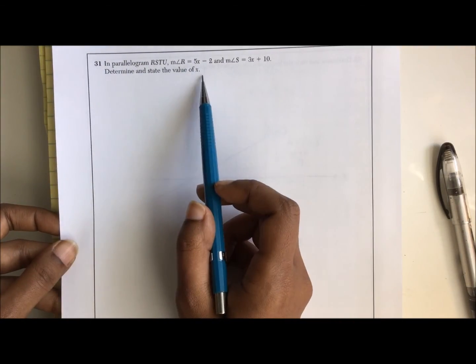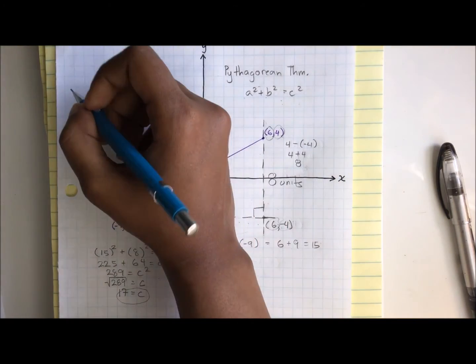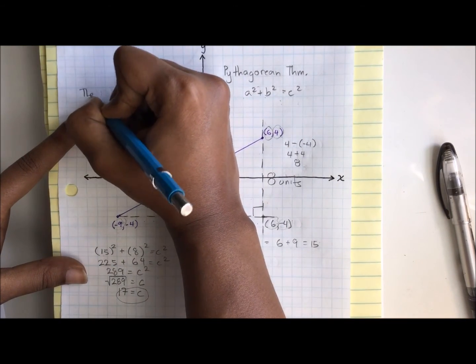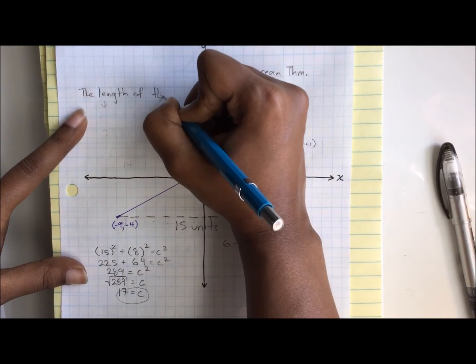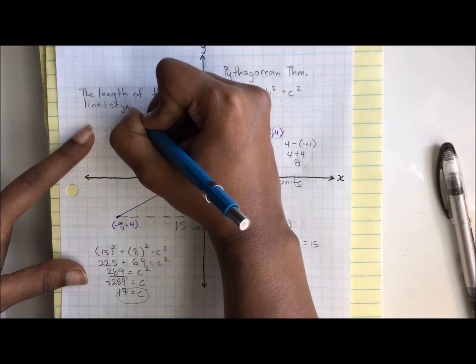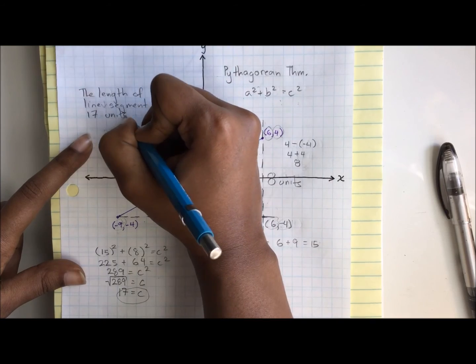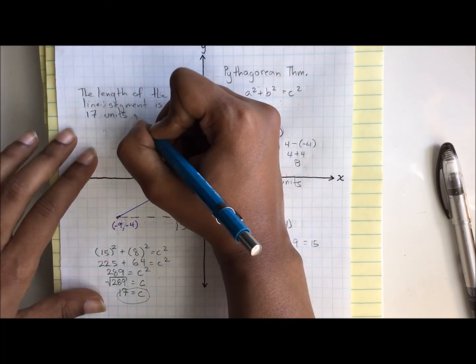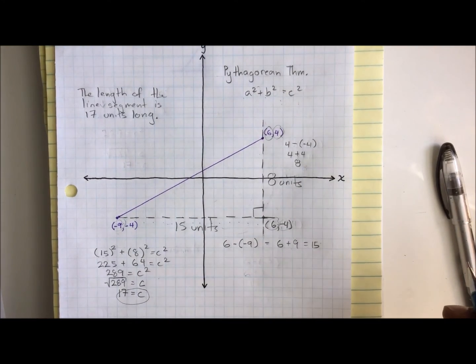Let's see. Determine and state the value—I'm sorry, that's completely wrong. It says determine and state the length of the line segment. We can write up here: the length of the line segment is 17 units, because it didn't give us any type of measurement, long. And that's it. If you have any questions, leave them in the comment section below. Subscribe and like. Thank you.